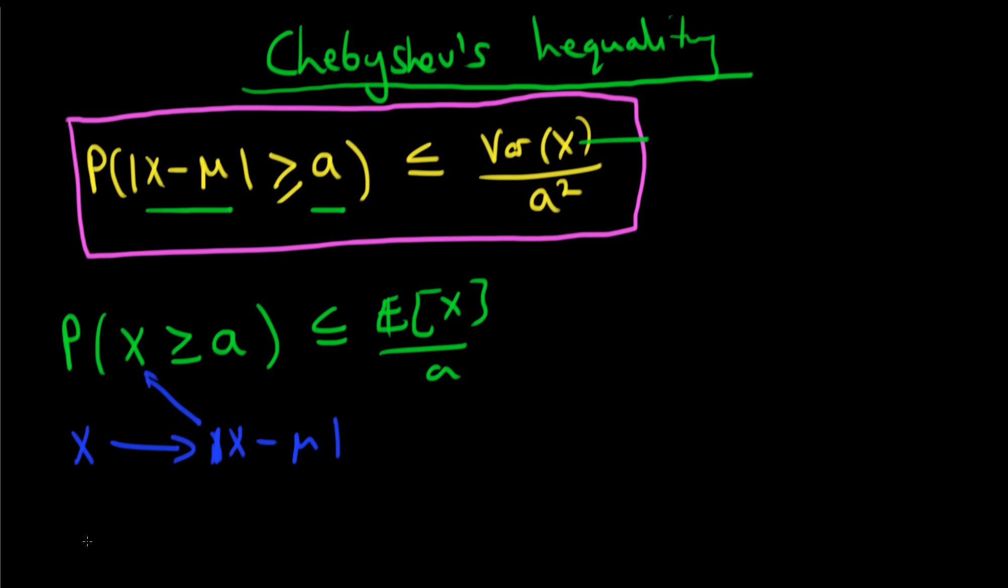So if I do that, we get that the probability of the modulus of x minus μ being greater than or equal to a is less than or equal to the expected value of now not x, but modulus of x minus μ, all divided by a.